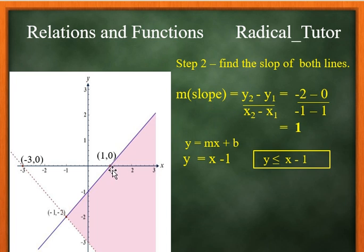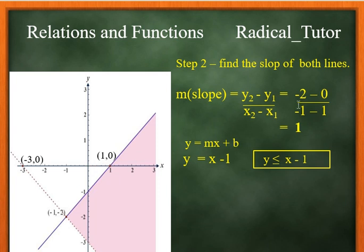The slope using two points: the x-intercept point is (x, 0) and the y-intercept is at minus 3. So the slope m equals (y2 minus y1) over (x2 minus x1), which is (0 minus negative 2) over (negative 1 minus negative 3) — this gives us negative 2 over negative 2, which equals 1. So the slope is 1, and the equation becomes y equals x minus 1.